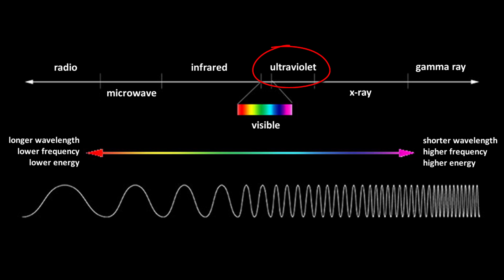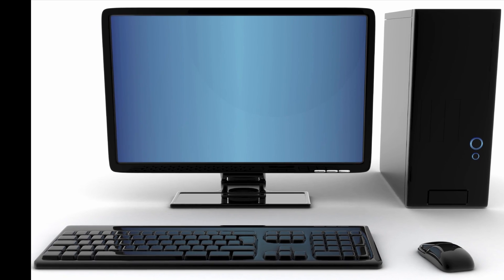Ultraviolet light is right above the visible spectrum and is found in several different places on Earth, including phones, computer screens, and tanning beds. These objects would emit new light, and the UV rays from the sun would cause the Earth to glow differently in the daytime.